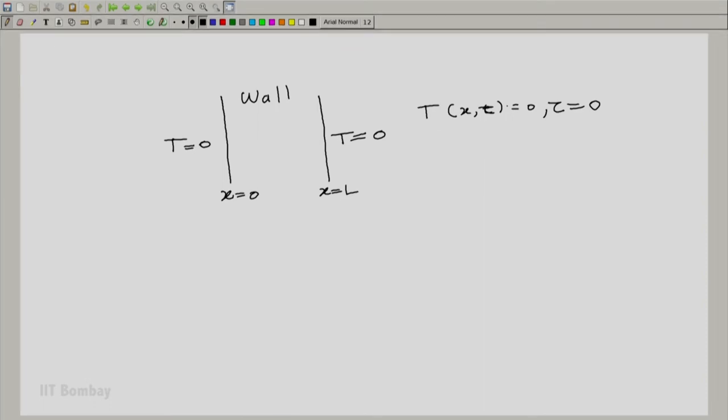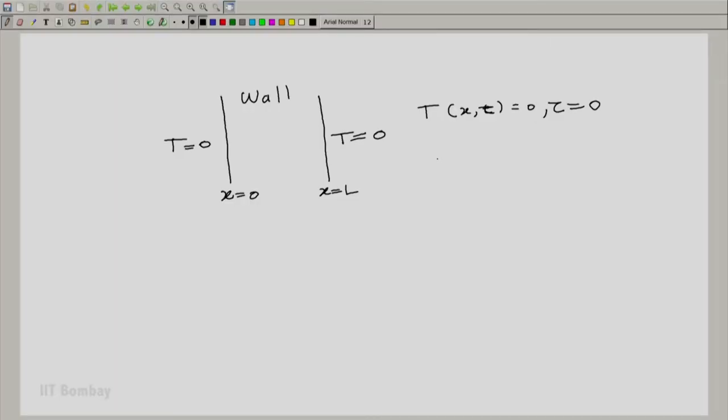Fourier empirically formulated the equation governing this by using heat balance. Basically, it is balancing the heat content going out plus the change in heat content of the wall. He got the equation given by ∂T(x,τ)/∂τ = ∂²T(x,τ)/∂x².